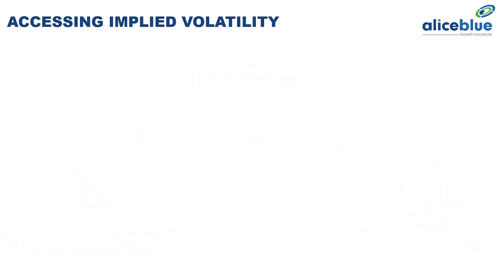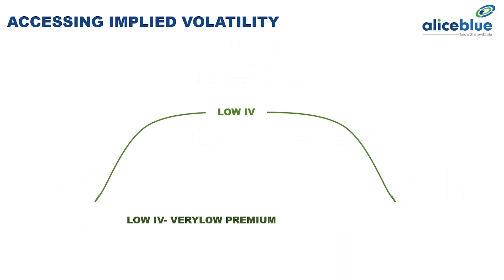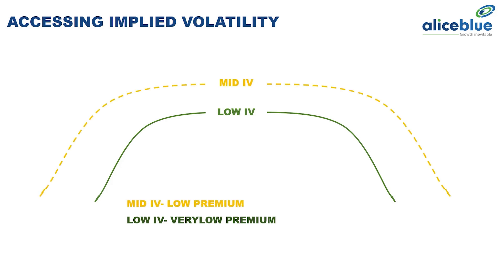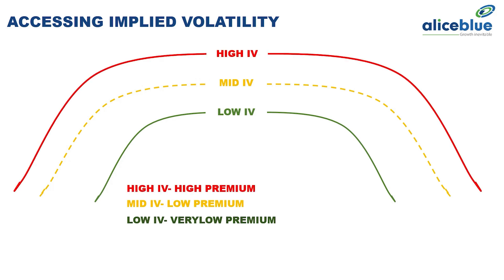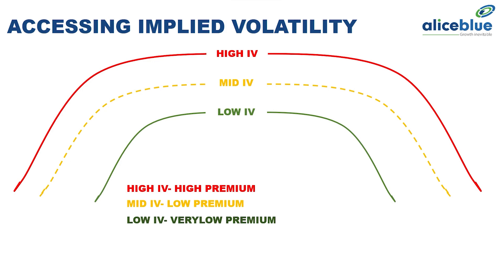Implied volatility has a direct impact on option pricing. Higher implied volatility increases the premium of option contracts, reflecting increased uncertainty and potential for large price swings. Conversely, lower implied volatility results in lower option premiums. For example, an option strike price having a higher implied volatility means the premium is very high because the extrinsic value of that premium is very high.